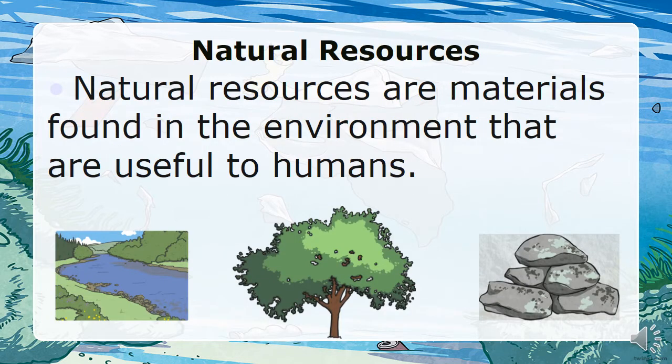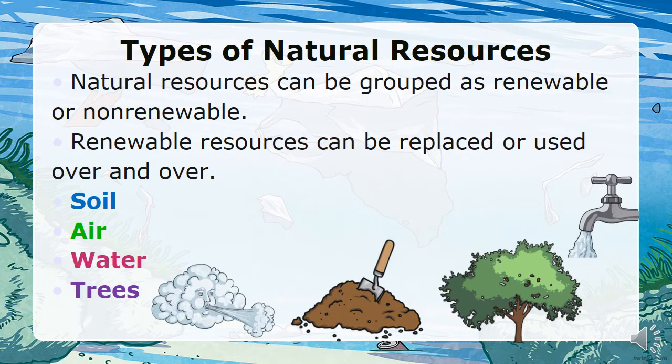Let's find out what natural resources are. Natural resources are materials found in the environment that are useful to humans. There are two types of natural resources. They can be grouped as renewable or non-renewable. Renewable resources can be replaced or used over and over. These include our soil, air, water, and trees.